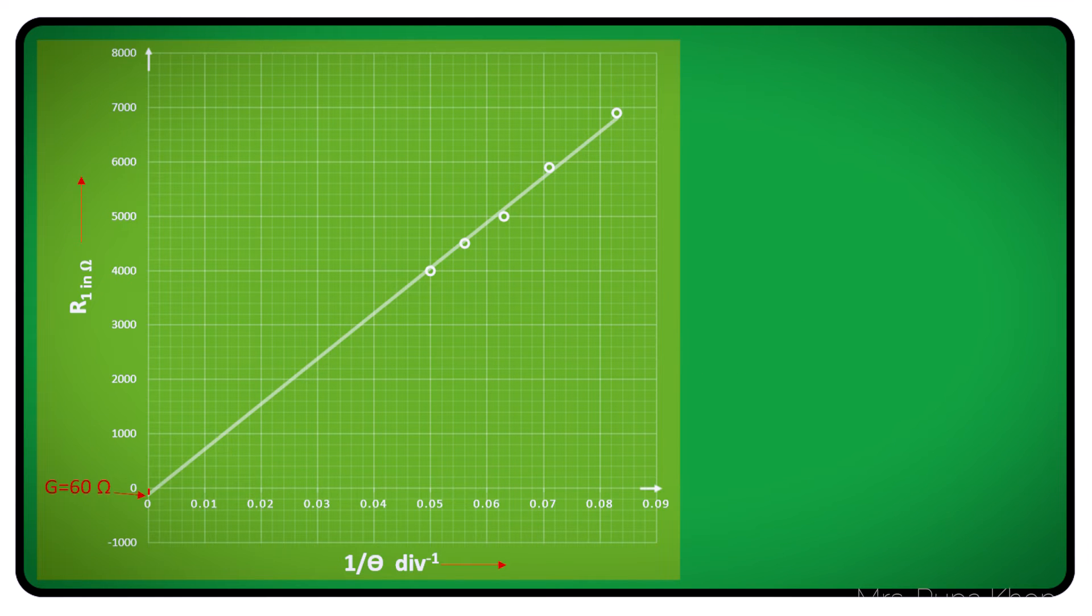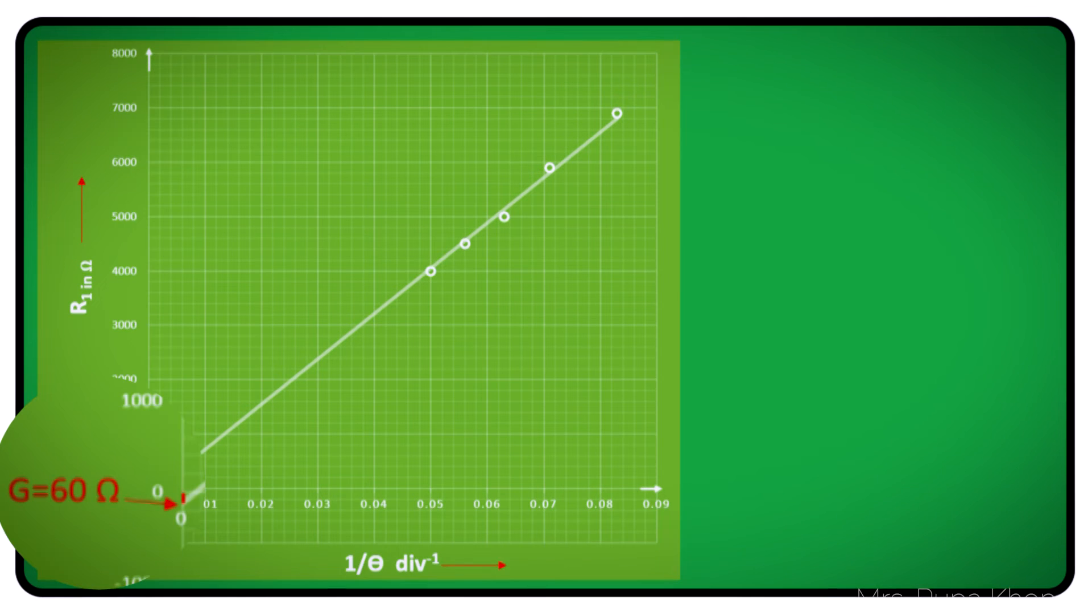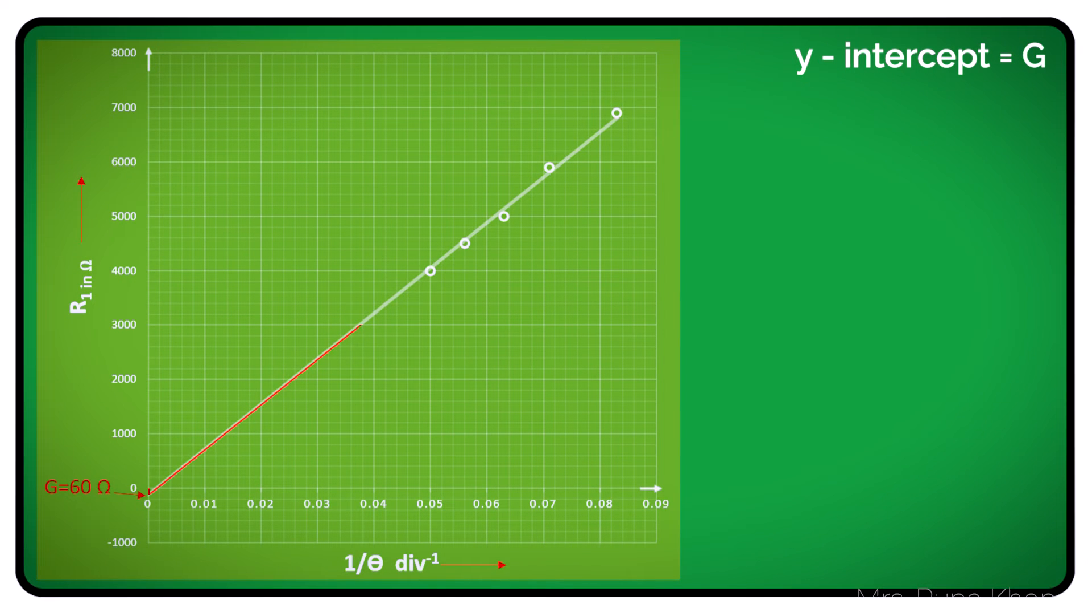So we have to plot a graph. So we are plotting a graph of R1 versus 1 by theta. In your graph page, it will be better if you take 1 centimeter equal to 500 ohms on the y-axis. We will get accurate value of galvanometer resistance. Because this galvanometer resistance is a very small value of 60 ohms on that scale. So it will be almost touching 0. So the graph of R versus 1 by theta is a straight line.